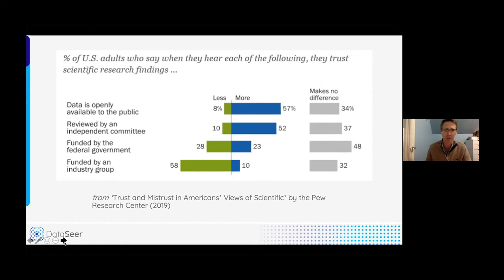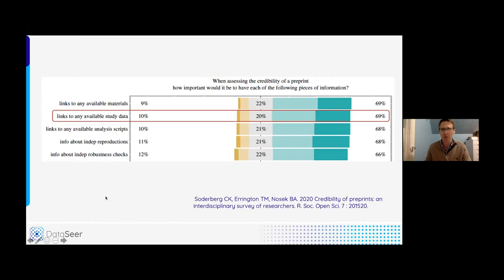And then the other thing I want to show is from a very recent paper by Brian Nosek and Siederberg-Norrington, which came out about three weeks ago now. They did a survey of researchers and they asked when assessing the credibility of a preprint, how important would it be to have each of the following pieces of information. This is the sort of top half of their figure five.